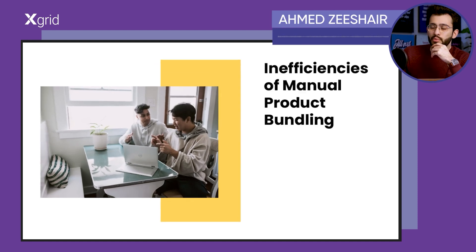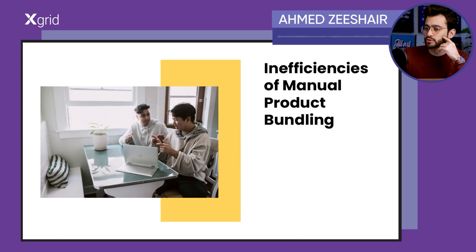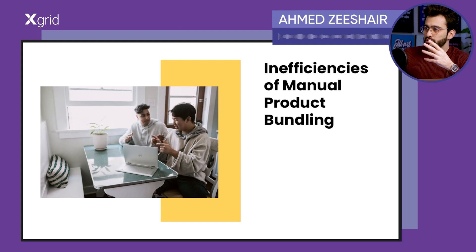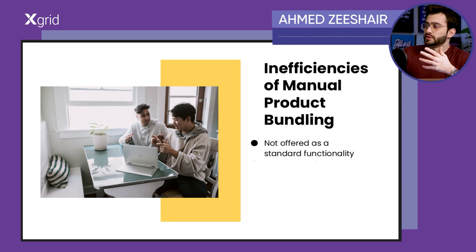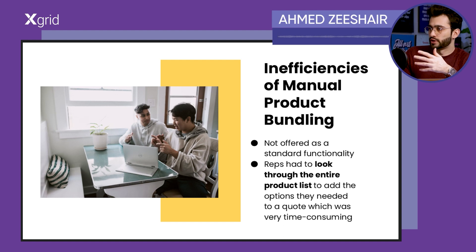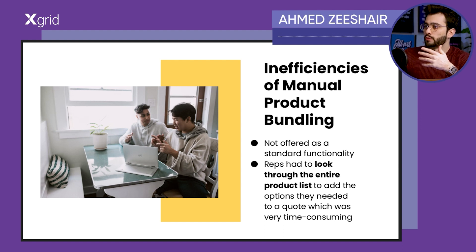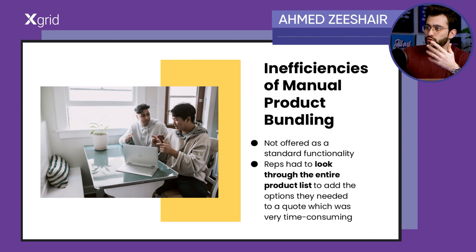Talking about the third problem, which was related to the bundle of products — it wasn't offered as standard functionality, and by default your reps must look through the entire product list to add the options they need to the quote, which was very time consuming.